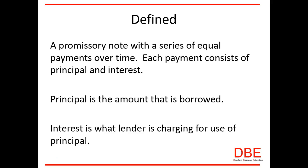An installment note is a promissory note with a series of equal payments over time. Each payment consists of principal and interest. Principal is the amount that is borrowed, and interest is what the lender is charging us for use of their principal.